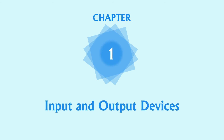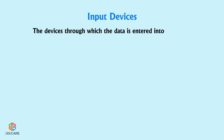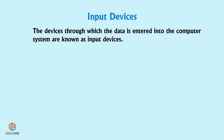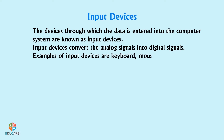Chapter 1: Input and Output Devices. Input devices are the devices through which data is entered into the computer system. Input devices convert analog signals into digital signals. Examples of input devices are keyboard, mouse, etc.